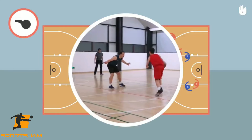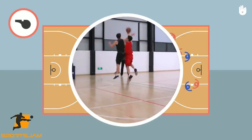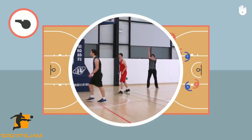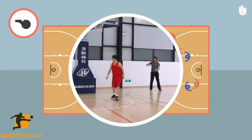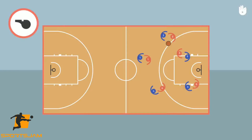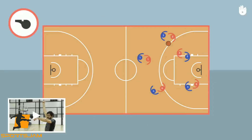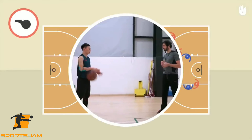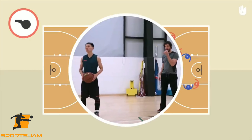In case of illegal contact, players can be sanctioned by fouls. To learn how not to commit them, watch the video on fouls. Fouls are sanctioned by turnovers with free shots for the opponent.